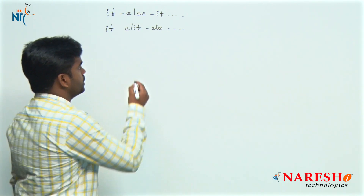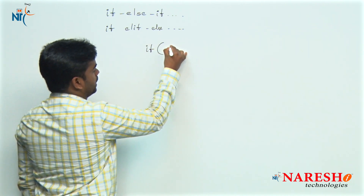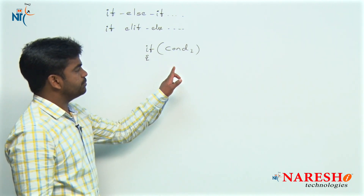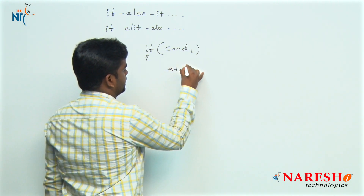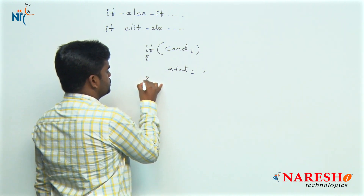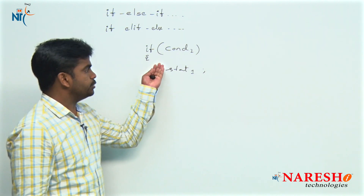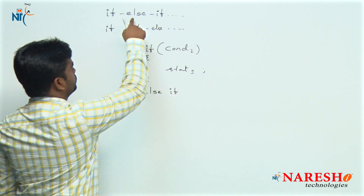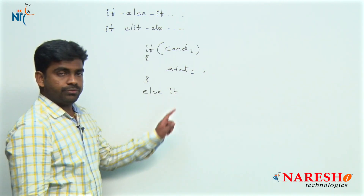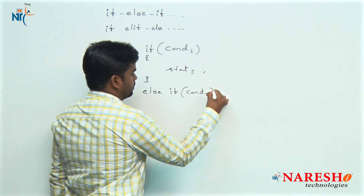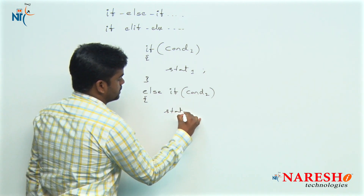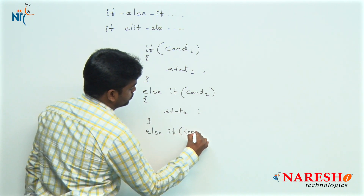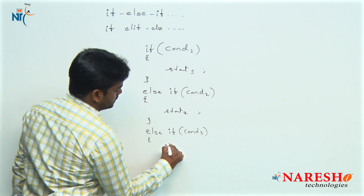Let us see the syntax. First, we write if and then condition one. If this condition is true, then all the statements you define inside this block execute — that is statements one. If the condition has failed, we provide the optional else block, and once again if, or you can write elif — else if. Then we check the second condition; if it is true, the second block gets executed. You can keep on writing: next one is else if, with condition three and statements three.